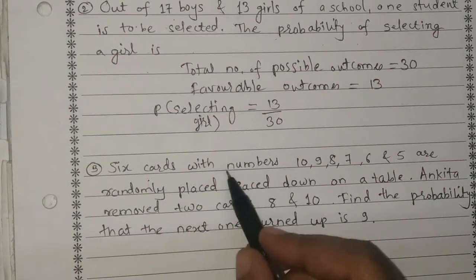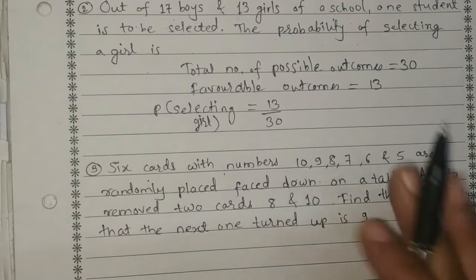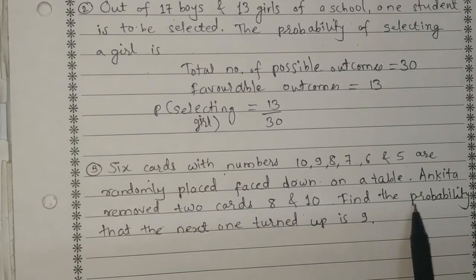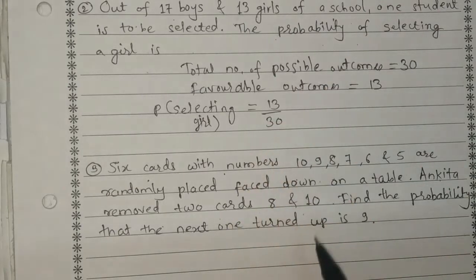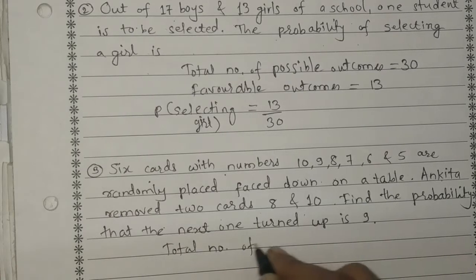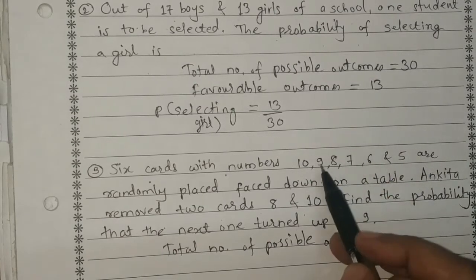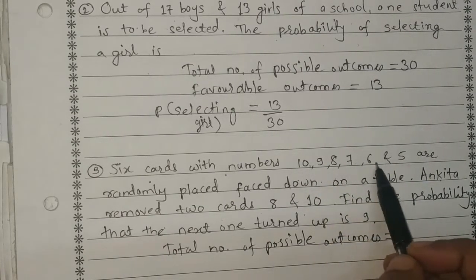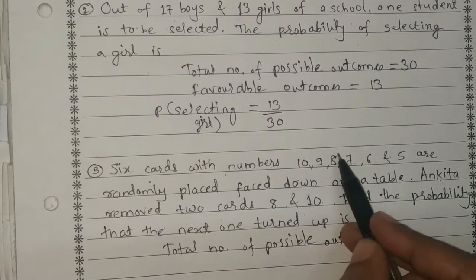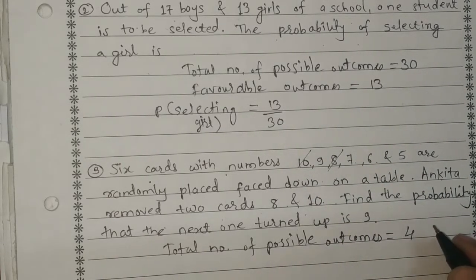The next question: 6 cards with numbers 10, 9, 8, 7, 6 and 5 are randomly placed face down on the table. Ankita removed 2 cards: 8 and 10. We have to find the probability that the next card turned up is 9. Total possible outcomes were 6, but since 8 and 10 are removed, we have 4 total cards remaining.